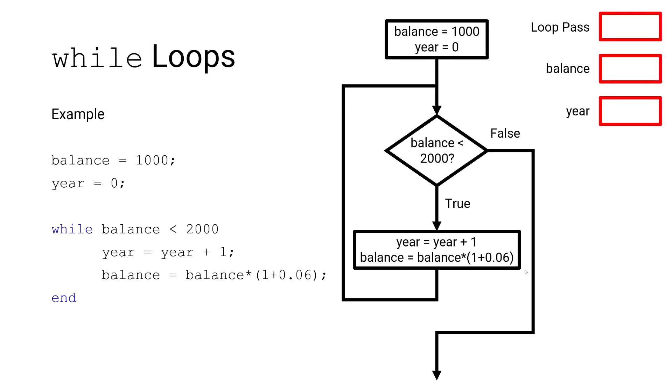Now let's take a look at a flowchart to visualize each loop pass and how the balance and year changes. Our first step is to initialize our variables for the balance and the year. Then we proceed to our logical expression, which states that while the balance is less than $2,000, our program will evaluate the statements within the while loop. Our initial balance of $1,000 is less than $2,000. That statement is true, and we begin our first loop pass.